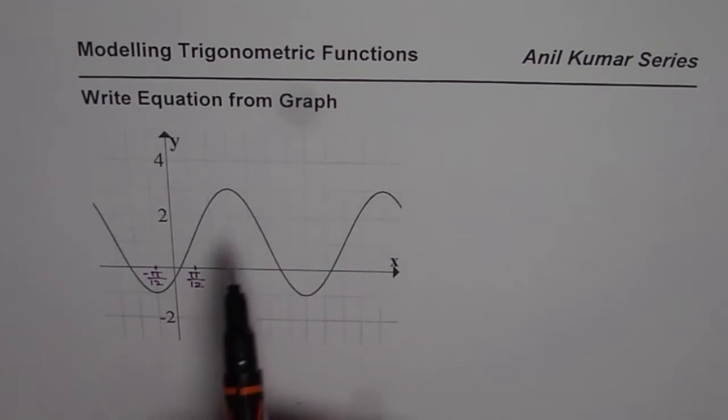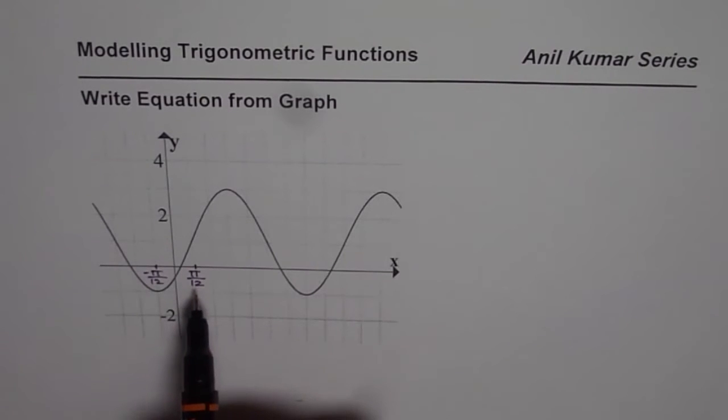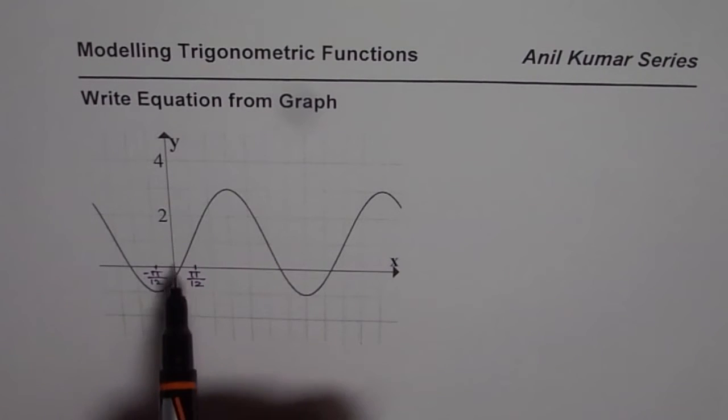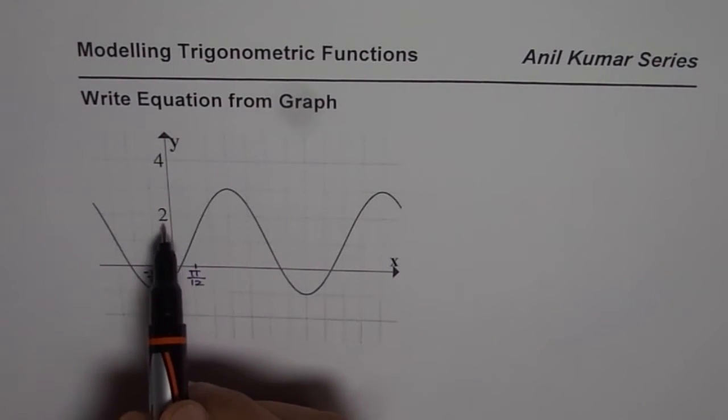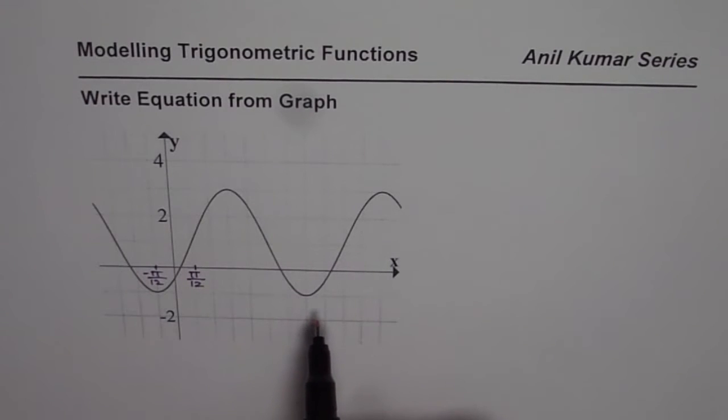We have a graph here where the x-axis is given in radians. We have π/12 as our division horizontally and vertically each division is one unit. Now we need to write equation for the given graph. You could write sine function or a cosine function for the same. So we will see how to develop the model for the given graph.